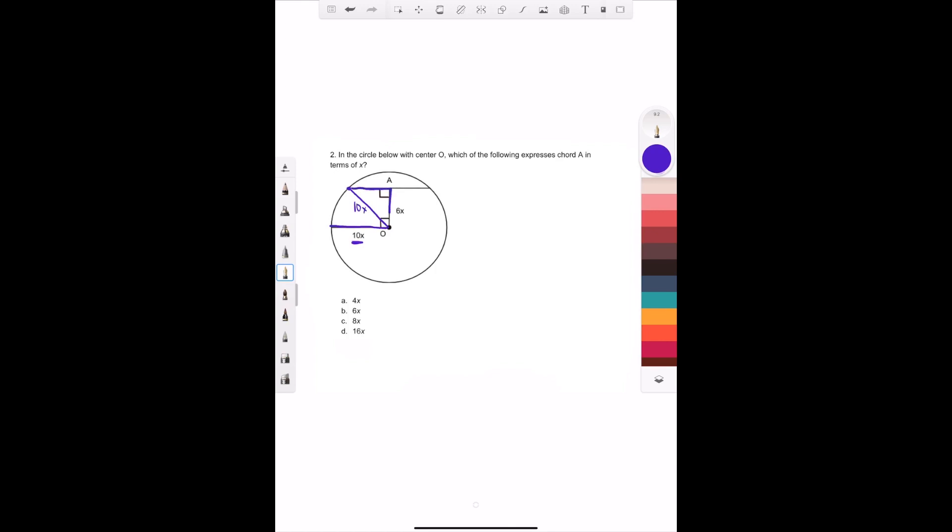We're going to deal with this triangle here, this right triangle, where we have 6x, 10x, and something that we don't know. Well, you could do Pythagorean theorem, or you could recognize, if you've memorized the 3-4-5 right triangle, that this is twice the 3-4-5, which would be 6-8-10. Which means this side right here is 8x, because we're dealing with 6x, 8x, and 10x.